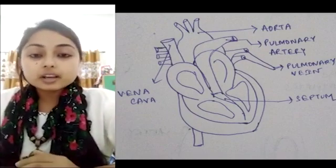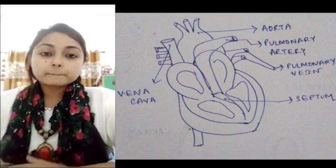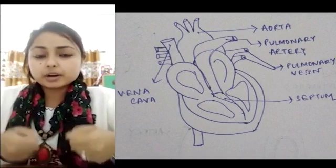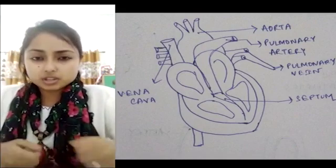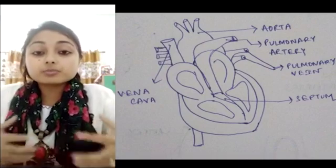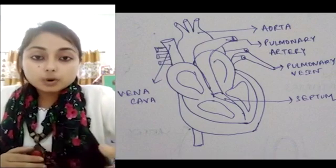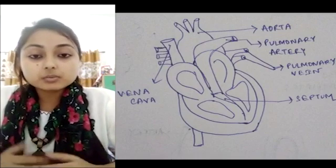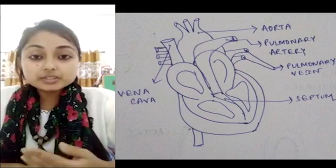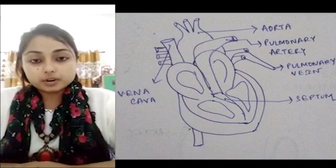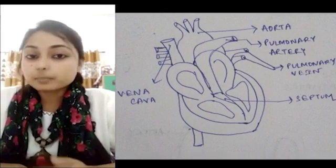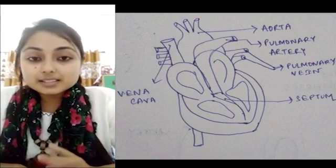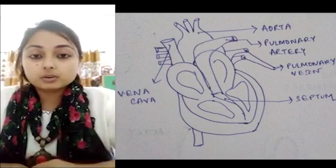Ventricles, however, have thick walls. This is because ventricles transport blood to all parts of the body, requiring great muscular power — just as throwing water a huge distance requires a big force. Because they need more muscular power to pump blood throughout the body, the ventricles have thick walls.